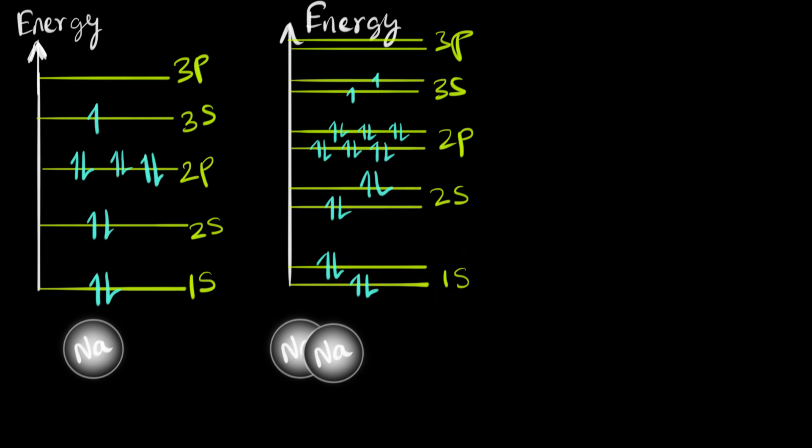So what happens if we add a third sodium atom to the mix? Now three atomic orbitals are overlapping, and as a result, our molecular orbital conveniently ends up having three energy levels. Each molecular orbital will have three energy levels. I think now you can understand where we're going with this.